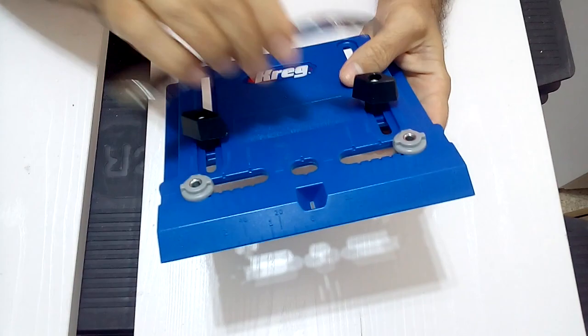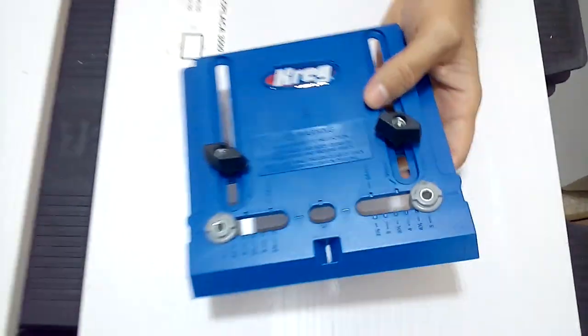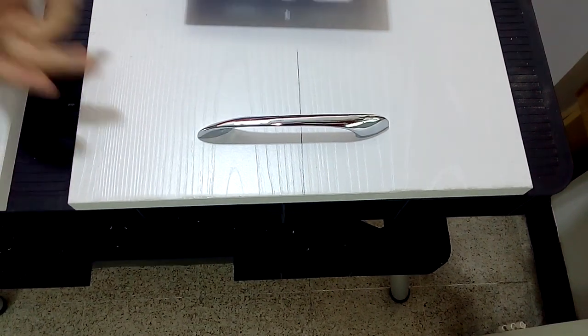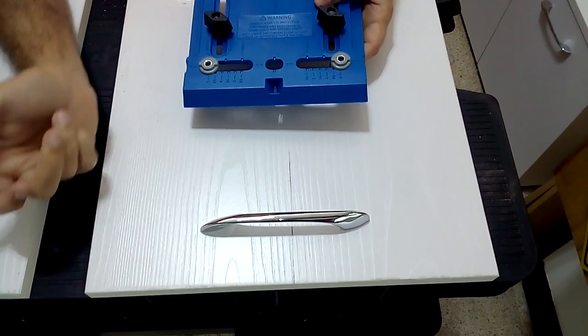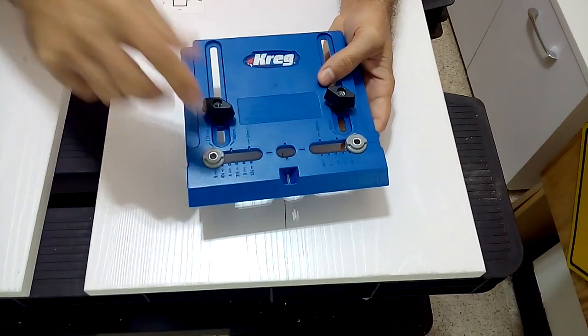I suggest you always check that the holes in the template match the distance between the handle screws before drilling. The other important measurement that we have to establish is the distance from the edge of our door. We adjust that measurement here.